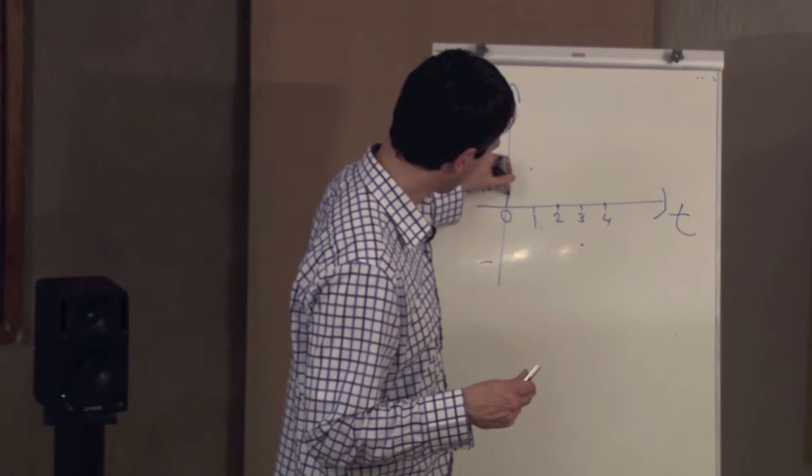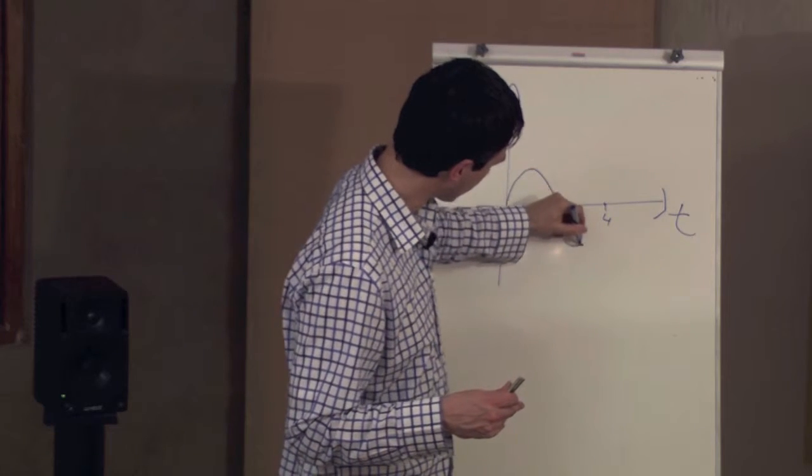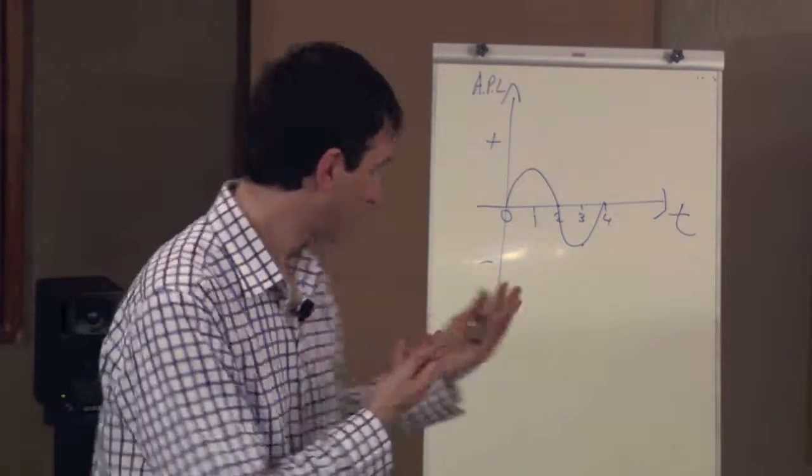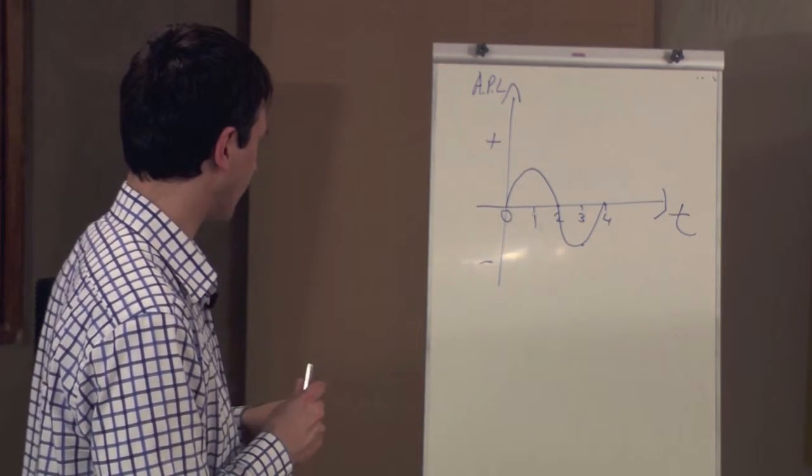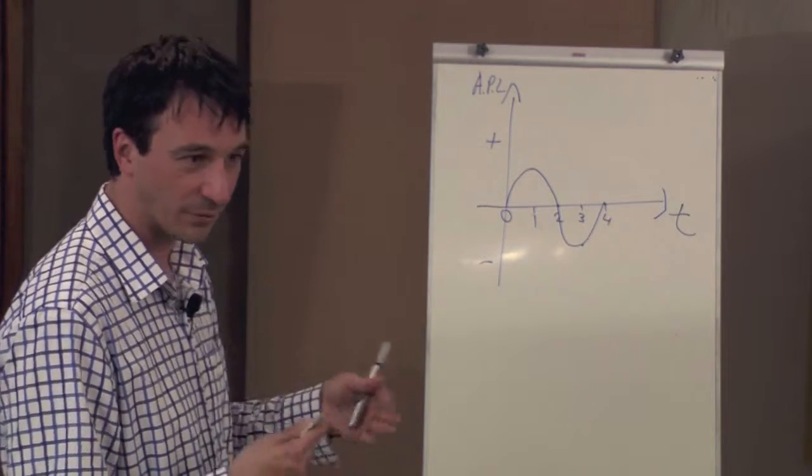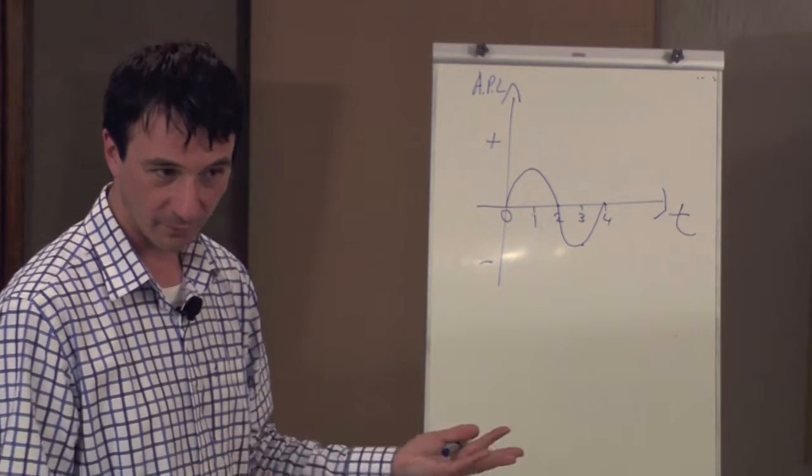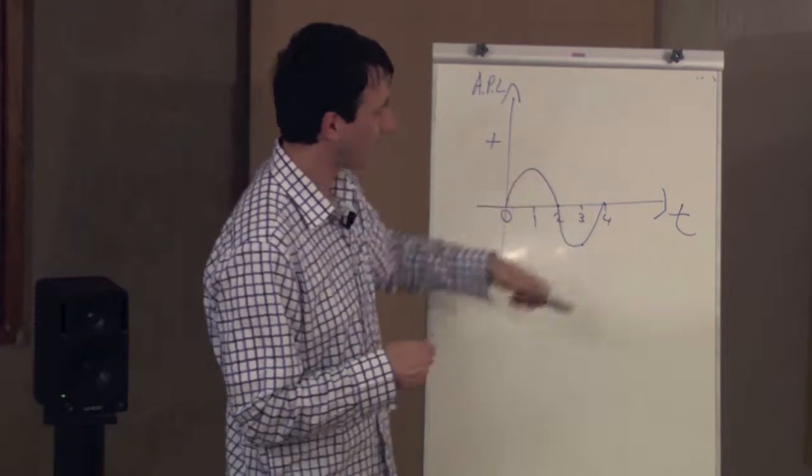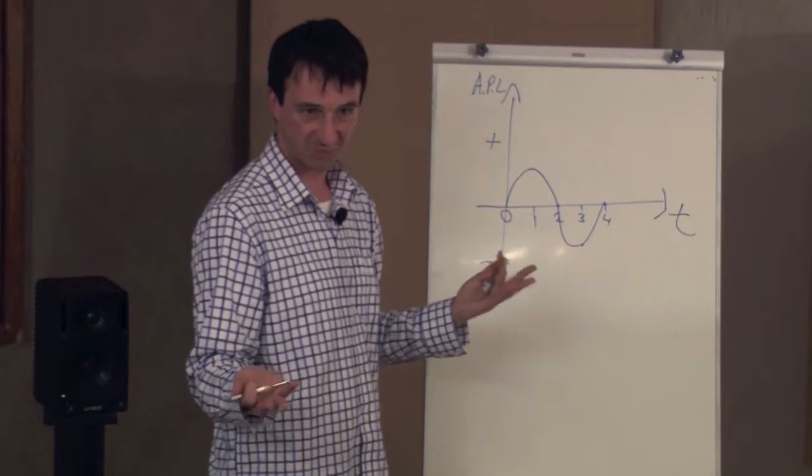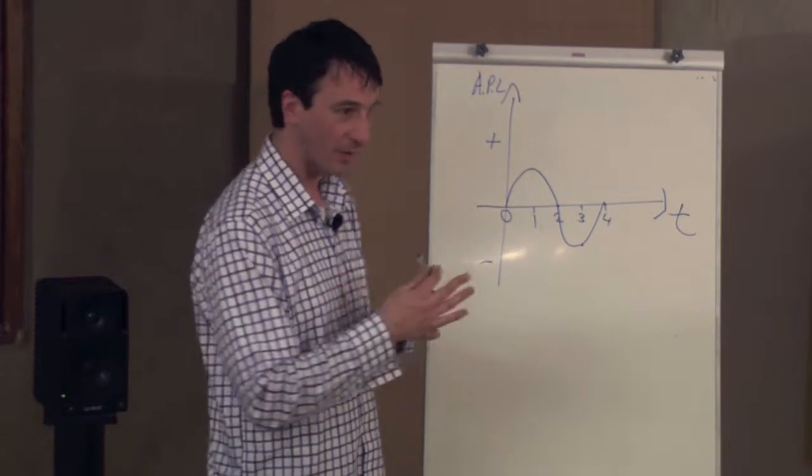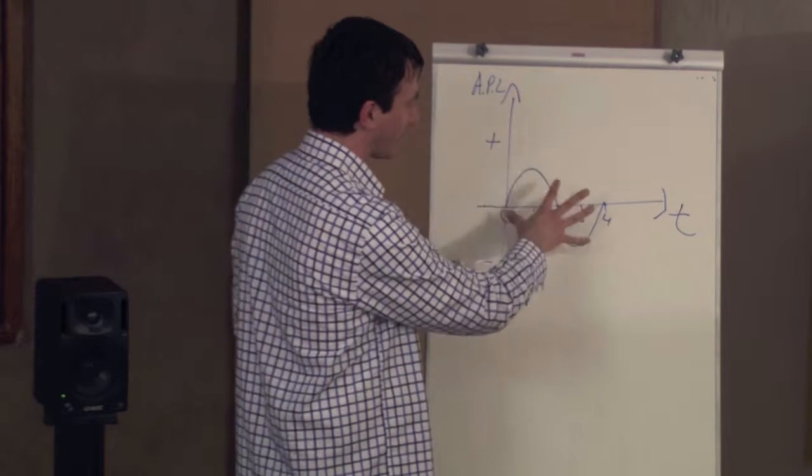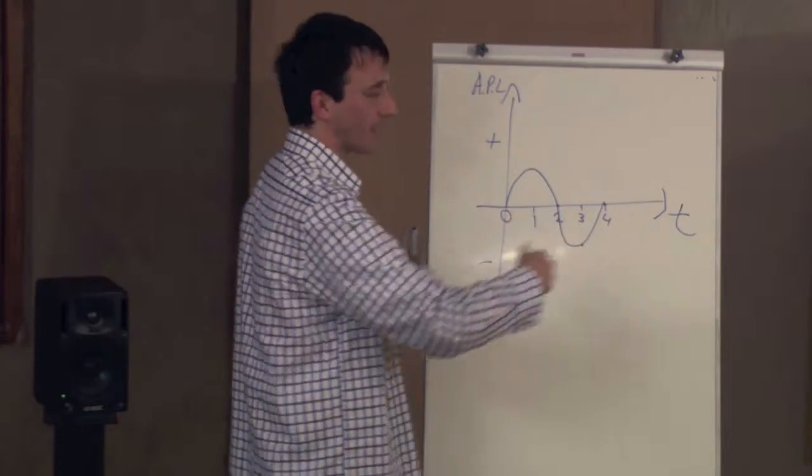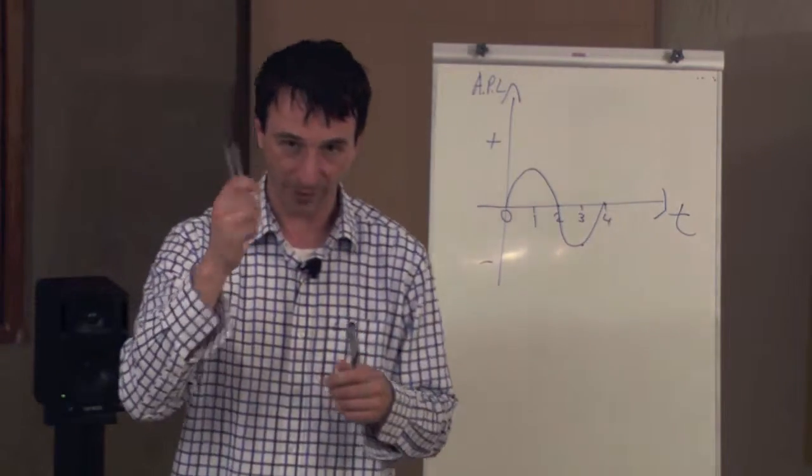Now if I join these dots in the fashion which it changes over time, the air pressure level, I have our famous sinusoid. You obviously have done this at school. You obviously have seen this before. So this is air pressure level varying over time.